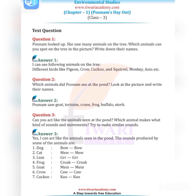Question number one: Poonam looked up and saw many animals on the tree. Which animals can you spot on the tree in the picture? Write down their names. The answer: I can see the following animals on the tree — different birds like pigeon, crow, cuckoo, and also squirrel, monkey, etc.